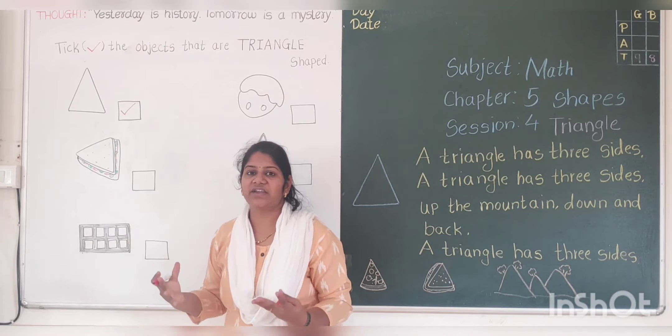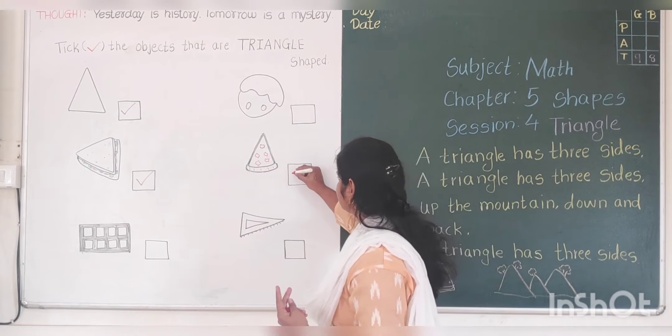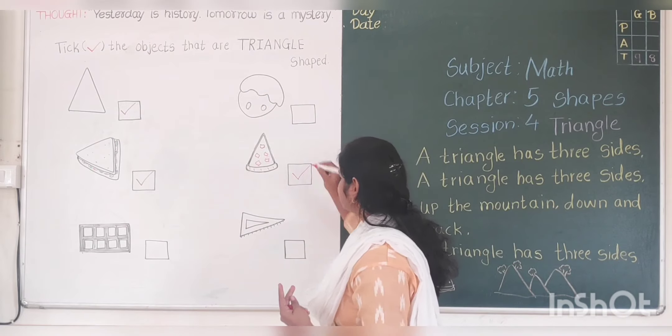Next. This is a triangle object. No corners, no sides. See here, this is a pizza slice. Let's count. 1, 2, 3. 3 corners. And 1, 2, 3. 3 sides. So here I am going to take it.